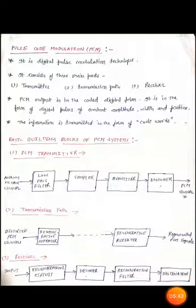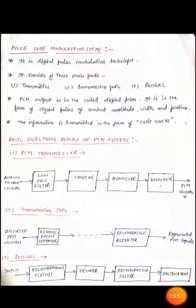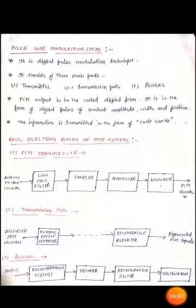In the PCM transmitter, the components are: first a low pass filter, then a sampler, then a quantizer, and then an encoder. In the PCM transmission path, we use a number of regenerator circuits or repeaters. In the receiver, first is a repeater, then a decoder, then a reconstruction filter, and finally the destination. These are the basic building blocks of the PCM system.